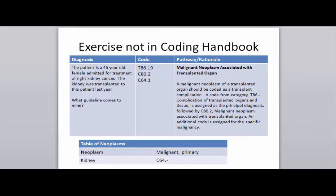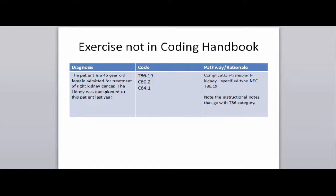Just a good example of knowing that it's not always about organs that you were born with — sometimes it's about organs that you received. To show you the pathway, in the case of a transplant, you're going to start with complication as your main term, then transplant, then kidney specified type NEC — that's a T86.19 code — and there are instructional notes that go along with this category. So the first thing I want to do is go into the alphabetical index and briefly look at this complication transplant.